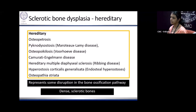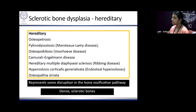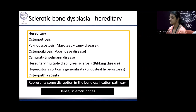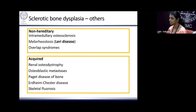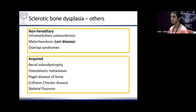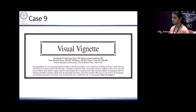Moving to sclerotic bone dysplasia — conditions where there is sclerosis of the bone. Hereditary causes include osteopetrosis, pycnodysostosis, osteopoikilosis, Camurati-Engelmann disease, and osteopathia striata. All these represent disruptions in the bone ossification pathway leading to dense and sclerotic bones. Non-hereditary conditions include melorheostosis. Acquired causes include osteoblastic metastasis — as with the Paget's disease patient we screened for malignancy — and skeletal fluorosis.